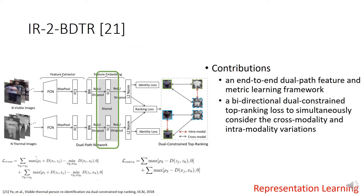The second work is our work in EJCA 2018. We present an end-to-end dual-path learning framework and a bidirectional dual-constraint top-ranking loss to simultaneously consider cross-modality and intra-modality variations. The weights of the embedding EPC layer are shared for multi-modality shareable feature learning. The ranking loss consists of two parts: cross-modality-constrained top-ranking loss and intra-modality-constrained loss. Experiments show that our end-to-end framework works better than a two-stage framework.